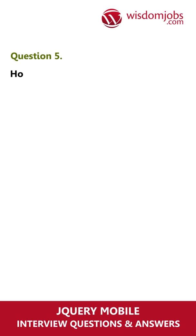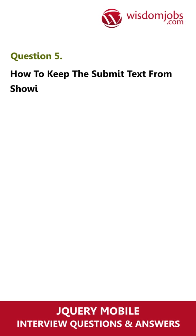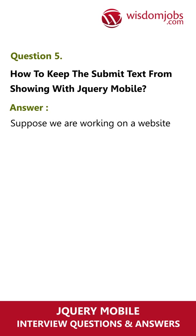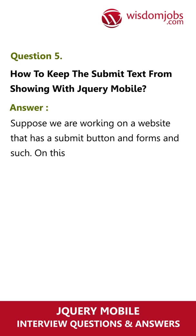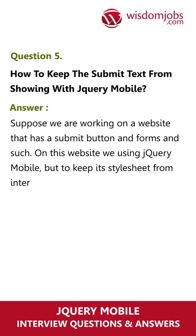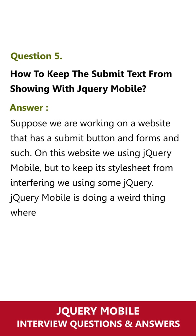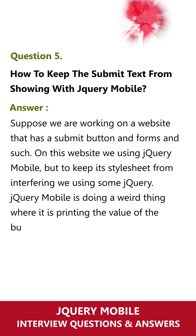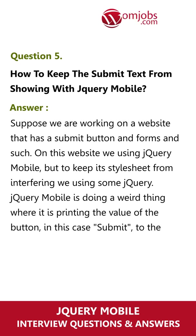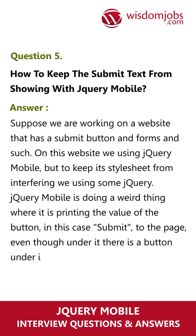Question 5. How to keep the submit text from showing with jQuery mobile? Suppose we are working on a website that has a submit button and forms. On this website we are using jQuery mobile, but to keep its style sheet from interfering we are using some jQuery. jQuery mobile is doing a weird thing where it is printing the value of the button — in this case, 'submit' — to the page, even though there is already a button that says 'submit' and actually works.